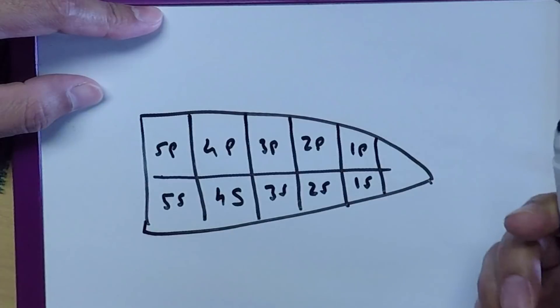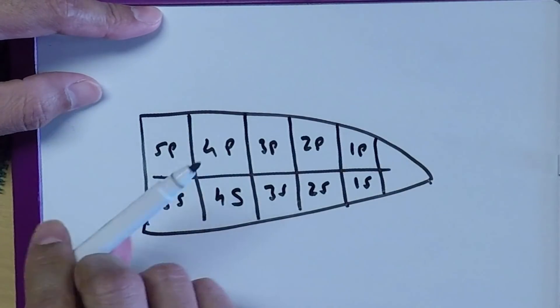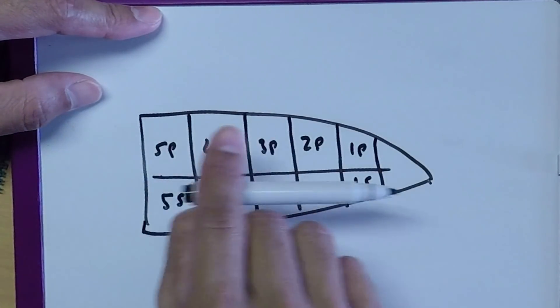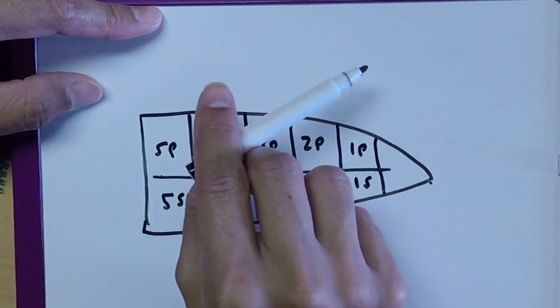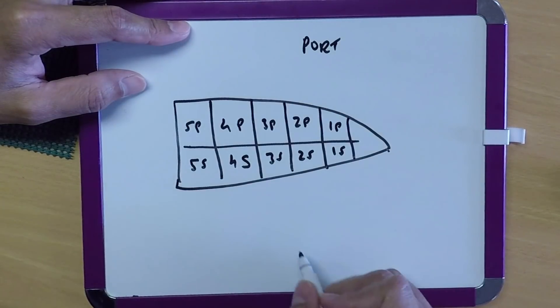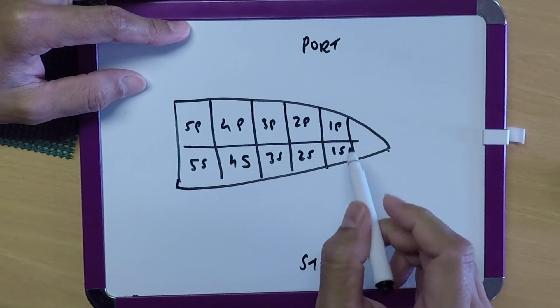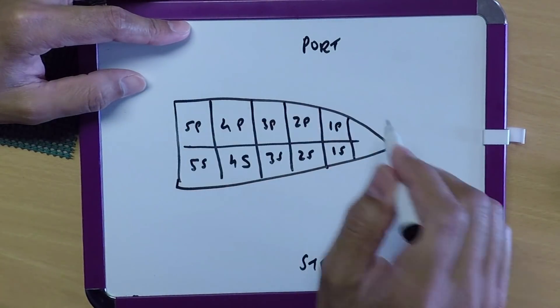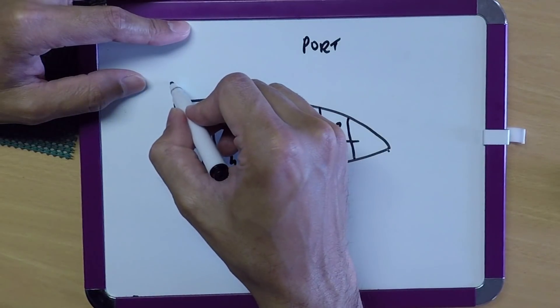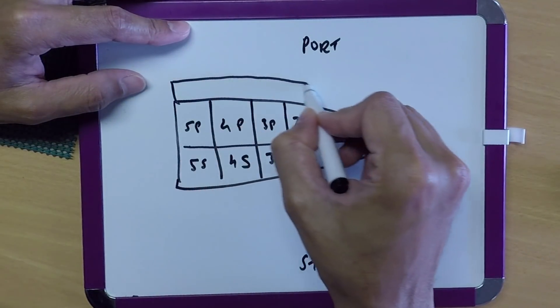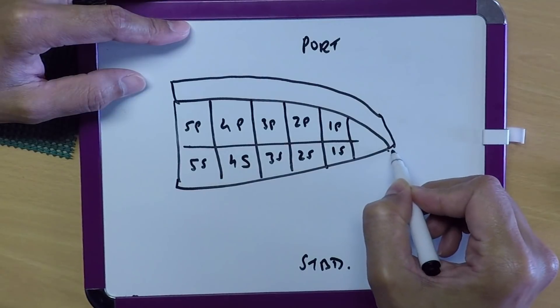For guys who don't know, when we are facing ahead, when we are looking ahead of the ship, the side to the left is port side and side to the right is starboard side. Now we have these cargo tanks, but around these cargo tanks we have ballast tanks as well. So the actual design of the ship is something like this.